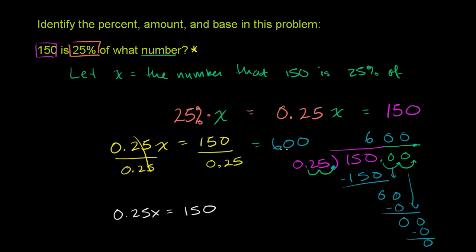And this makes total sense. Because if 150 is 25% of some number, that means 150 should be 1 fourth of that number, or it should be a lot smaller than the number. And it is. 150 is 1 fourth of 600. Now, let's answer their actual question.